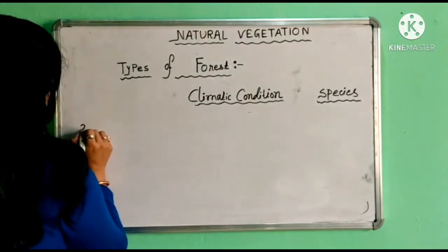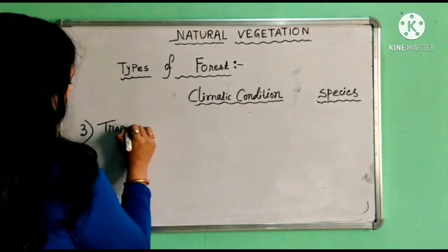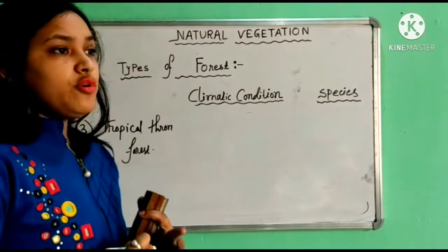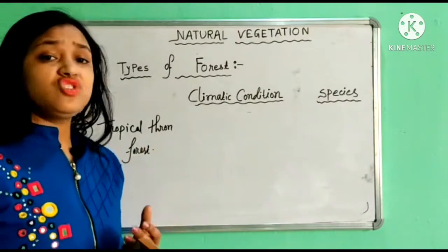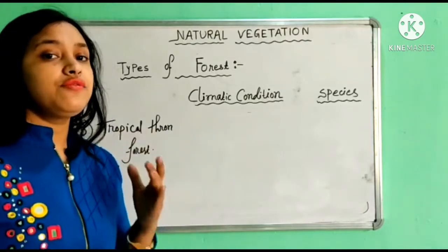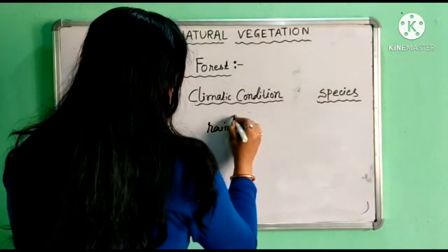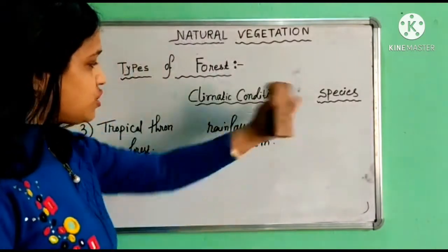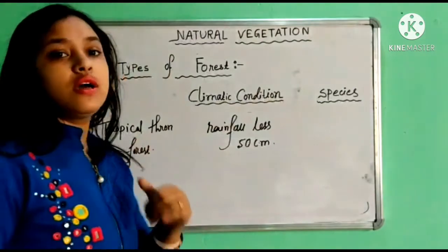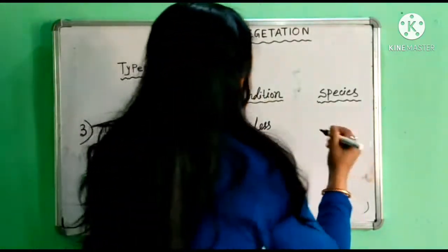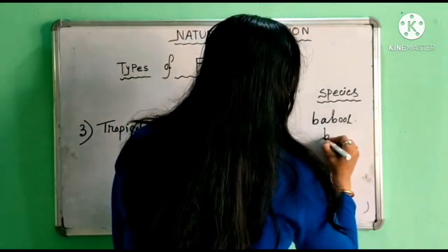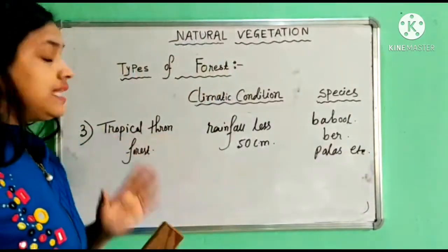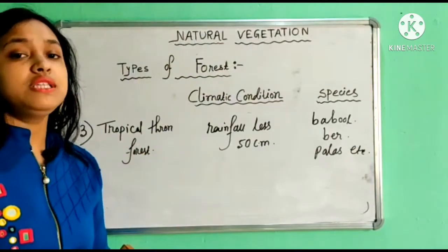Our next forest type is tropical thorn forest. This type of forest is mainly found in areas which receive annual rainfall less than 50 centimeters. The species found in this category include babul, bear, and polish, among others.